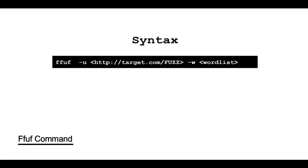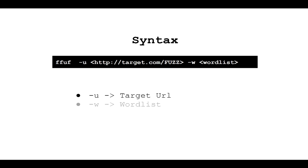For this video we will see how to find some hidden files on our website. We are going to provide two inputs to FFUF: one is the URL and the other is a wordlist. A wordlist is just a list of words — in this case, a list of file names we are looking for on the website. The target URL has a FUZZ placeholder, which will be replaced with the words in the wordlist. For example, if we have index.html in the wordlist, the URL will become target.com/index.html. FFUF will then hit this URL and tell us whether the file exists based on the website's response.